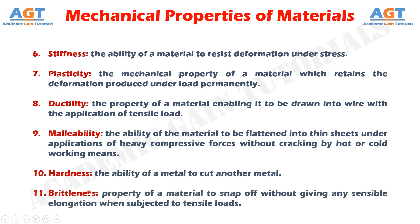Brittleness. Brittleness is the property of a material opposite to ductility. It is the property of breaking of material with little permanent distortion. Materials having less than 5% elongation under loading behavior are said to be brittle materials. Brittle materials when subjected to tensile loads snap off without giving any sensible elongation. Glass, cast iron, brass and ceramics are considered as brittle materials. Thus, brittleness is the property of a material to snap off without giving any sensible elongation when subjected to tensile loads.